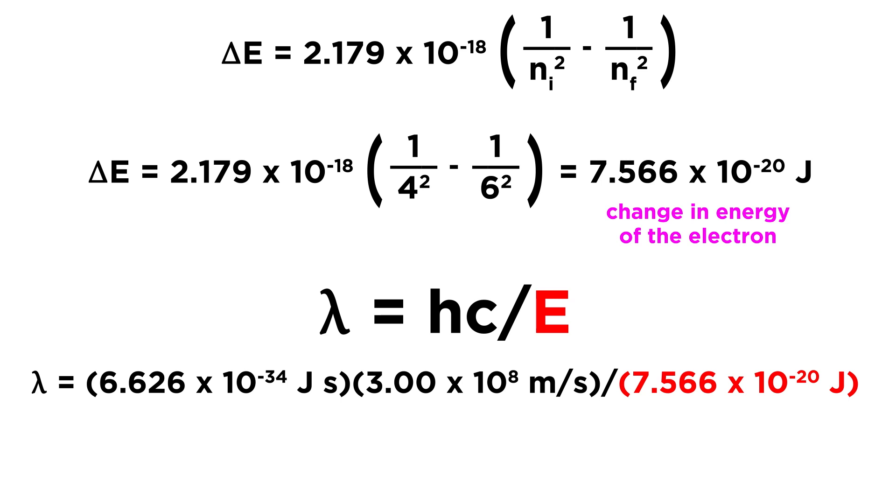Joules cancel because we have joules on top from Planck's constant and on the bottom from energy. Seconds cancel from Planck's constant times meters per second from the speed of light. Plugging this into a calculator, we get 2.626 × 10^-6 meters as the wavelength of the photon involved in this transition.